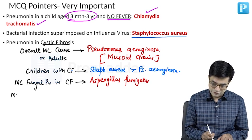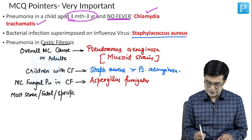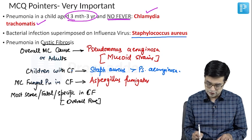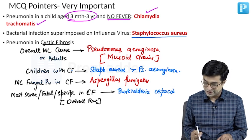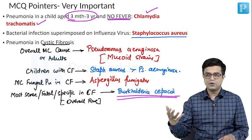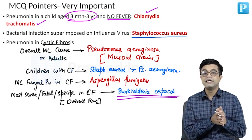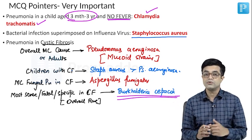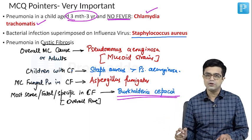If the question says most severe, fatal, or specific organism causing pneumonia in cystic fibrosis — although overall rare — when it does occur it is life-threatening. The organism is Burkholderia cepacia, a member of the Pseudomonas family belonging to a group that includes Burkholderia mallei, Pseudomallei, and cepacia. Burkholderia cepacia is so specific for cystic fibrosis that finding it retrospectively makes you think of underdiagnosed cystic fibrosis in the child. These causes can be asked as clinical scenarios, one-liners, or match-the-column in superspeciality exams.